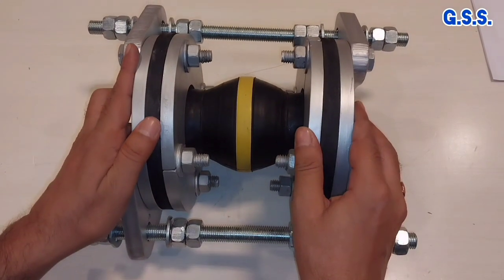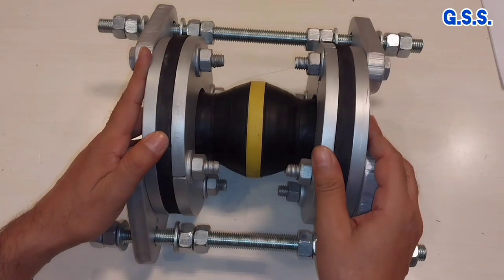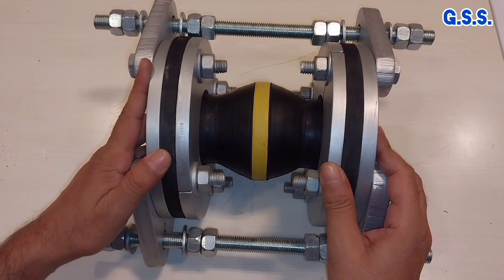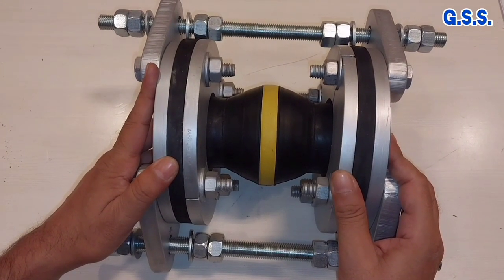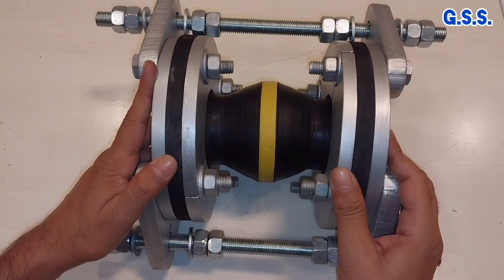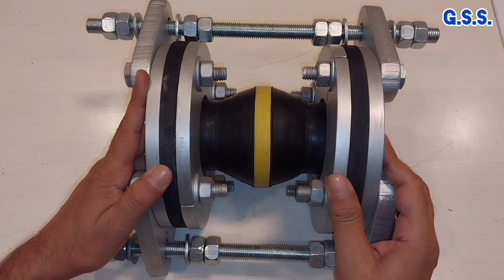This is a rubber bellow. This type of rubber bellows are used for non-critical service like air, water, up to pressure of 10 bar gauge and temperature of 100 degree Celsius.